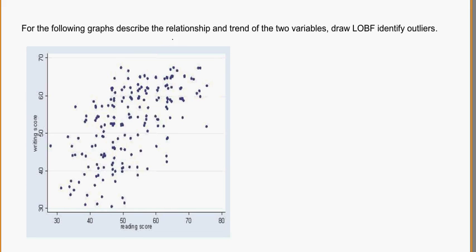Alright, so for the following graphs, we're going to describe the relationship and trend of the two variables, draw our line of best fit, and identify any outliers.